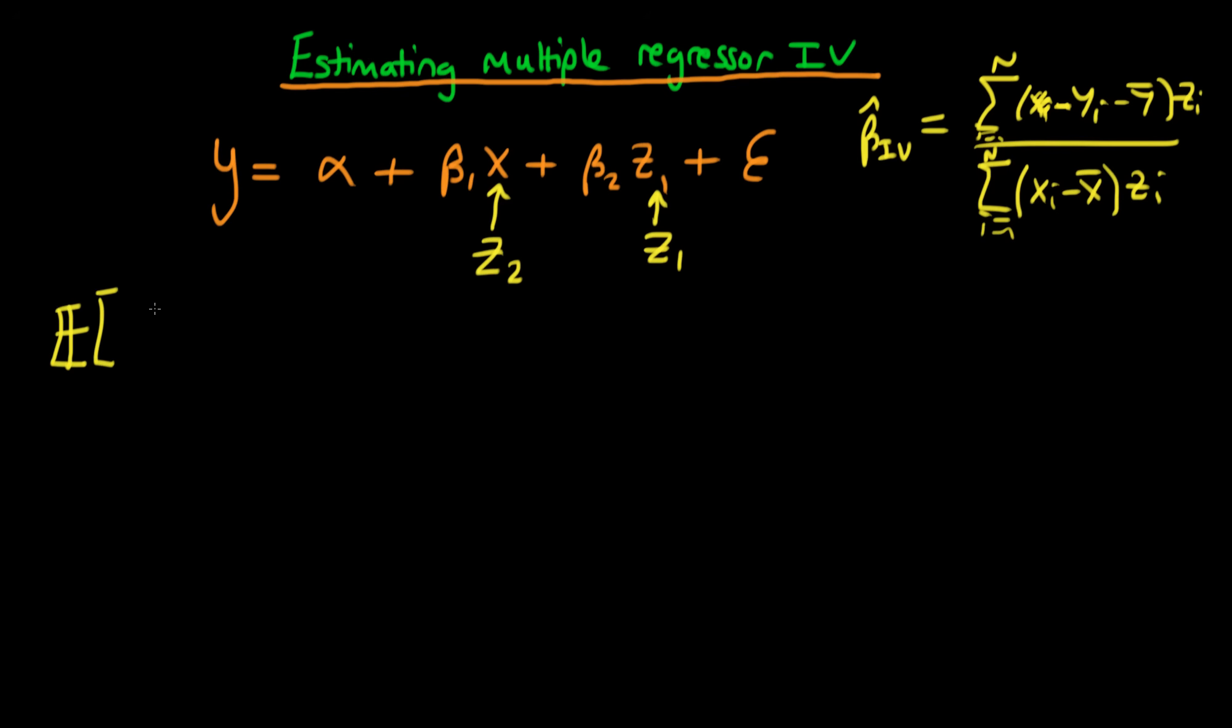The first is the trivial one that we write that the expectation of our error, epsilon, has to be equal to zero. And essentially all that's doing is it's just saying well let's set alpha such that this error term always on average is zero. And that's absolutely fine, that's not particularly restrictive.